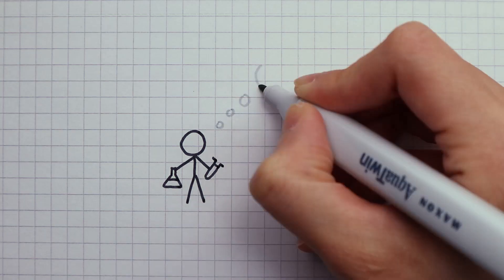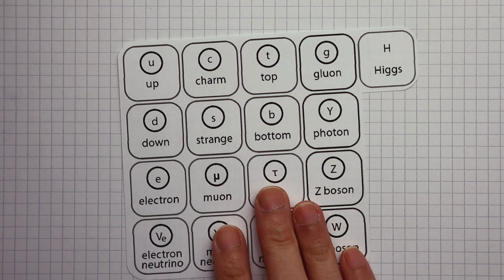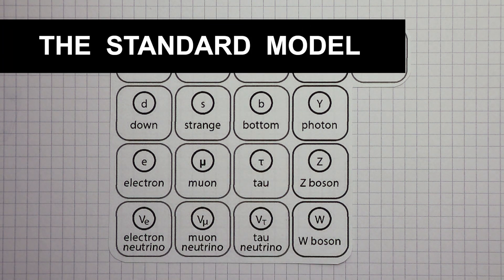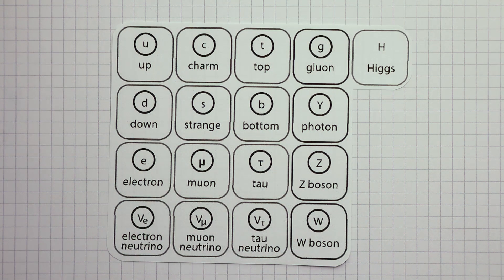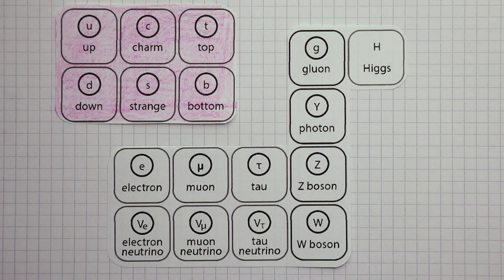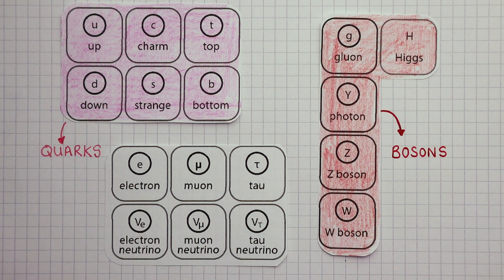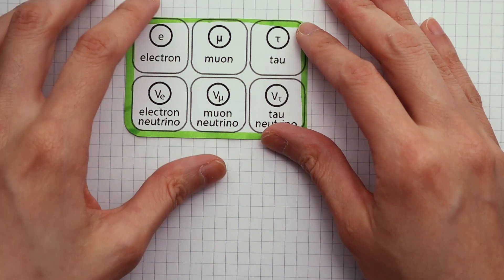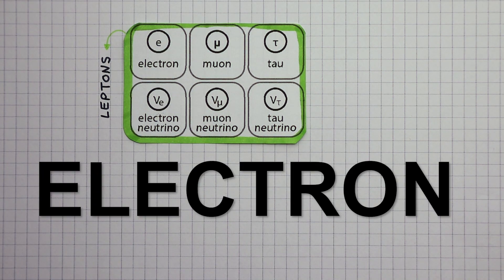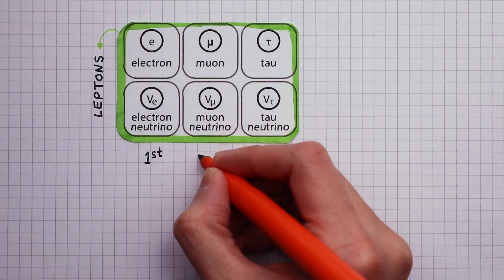While the chemists have their periodic table, physicists have the standard particle model that summarizes the fundamental particles in the universe. Here are the six flavors of quarks. These are the bosons, but what I want to focus on in this video is just these right here, the leptons. The electron and the electron neutrino are categorized as first-generation leptons.